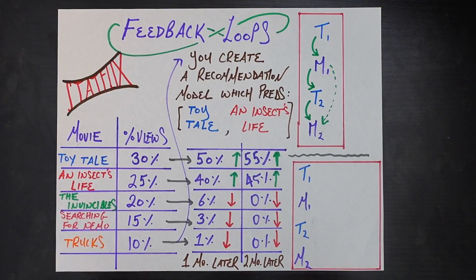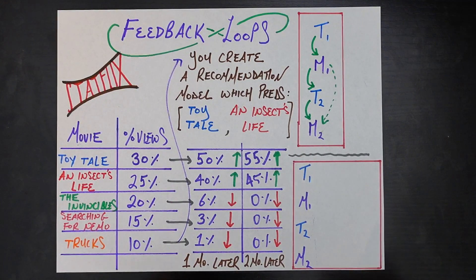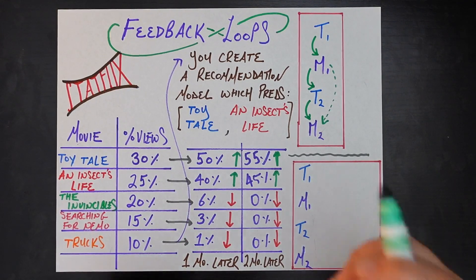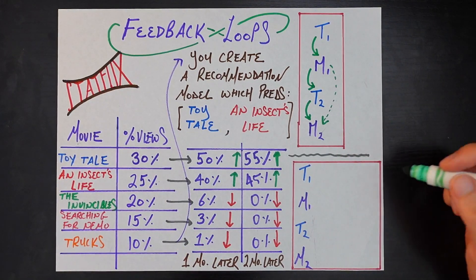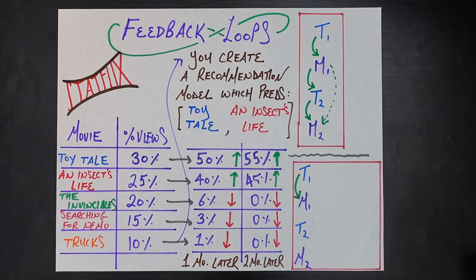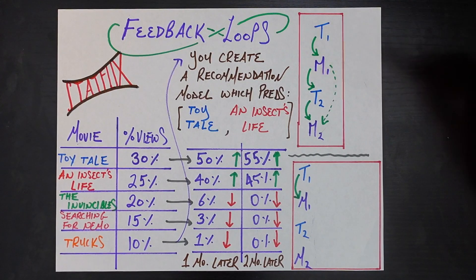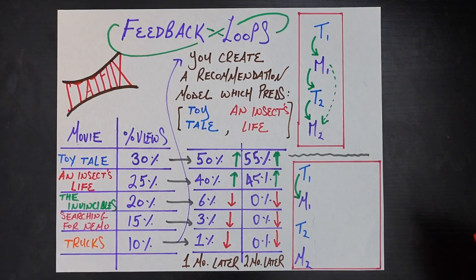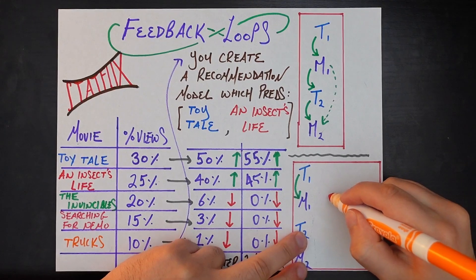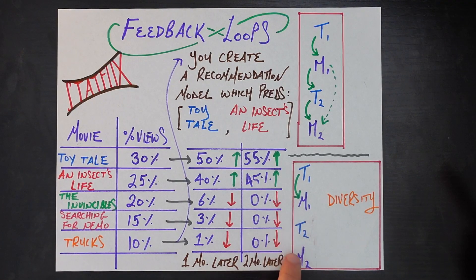The first step of the solution is the same — we have some initial training data and model one is trained on it. Here is one way folks go about solving the feedback loops problem. The crux of the issue was that all training data in time period two was generated solely from model one. We're going to break that single causation by introducing a very important element called diversity. Diversity ensures that the training data generated in time period two is not solely a function of the model trained in time period one.